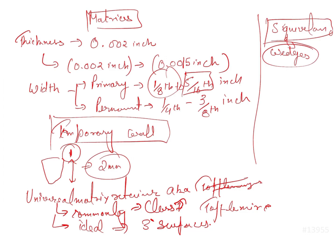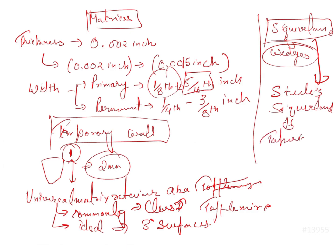The Steele's Siqveland matrix is a self-adjusting matrix retainer and does not require wedges. It is used when there is a marked difference in the dimension of the cervical and occlusal surfaces — that is, whenever there is a tapering tooth, you use the Steele's Siqveland matrix retainer.